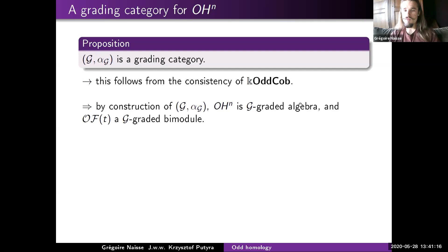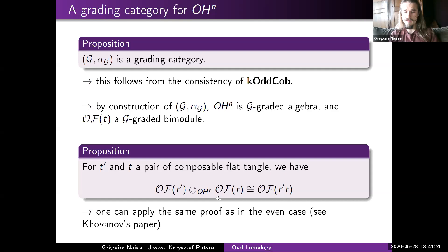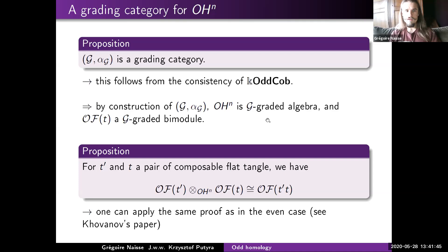One can then show that the tensor product over the odd arc algebra of the bimodule O(t) with O(t') is isomorphic to O(t' ∘ t), the space associated to the glued tangle. The proof is essentially the same as in Khovanov's original paper, because all difficulties have been addressed by the G-graded framework.